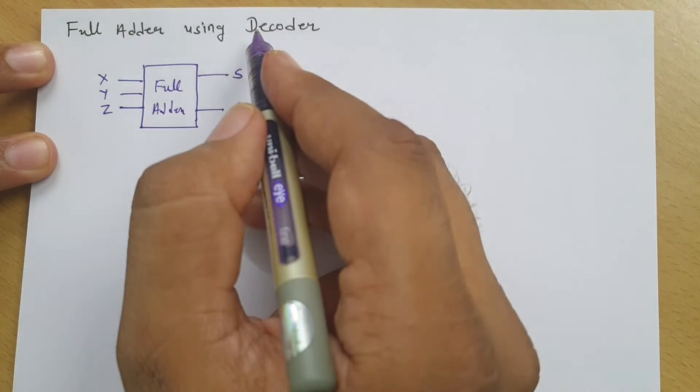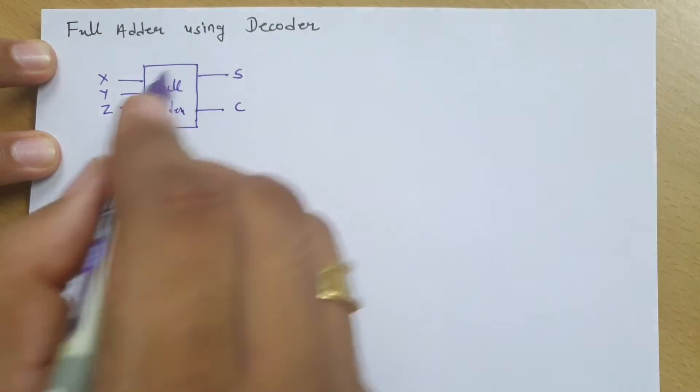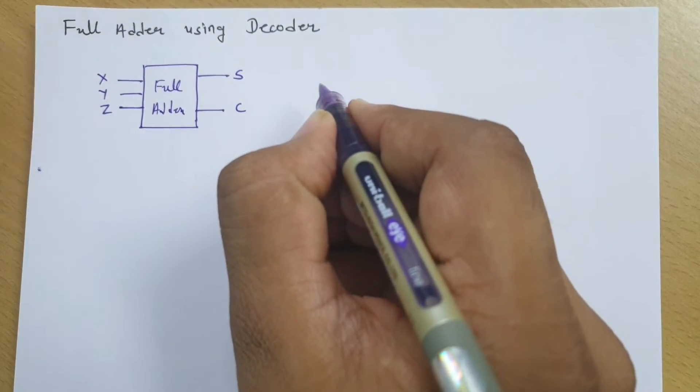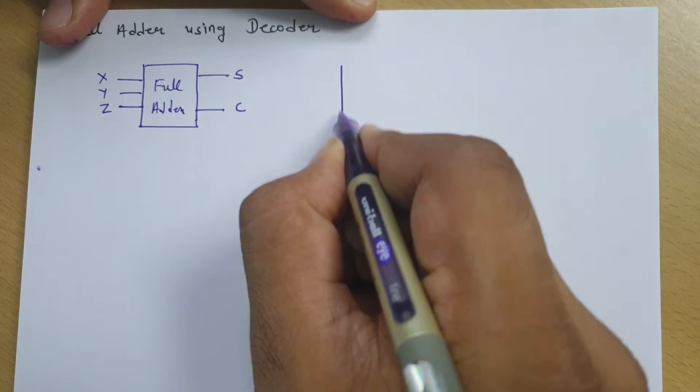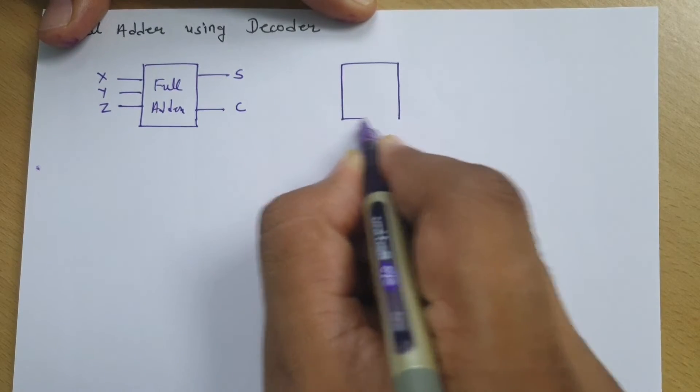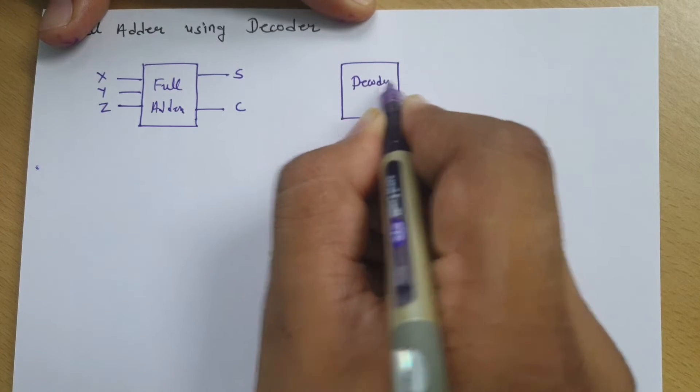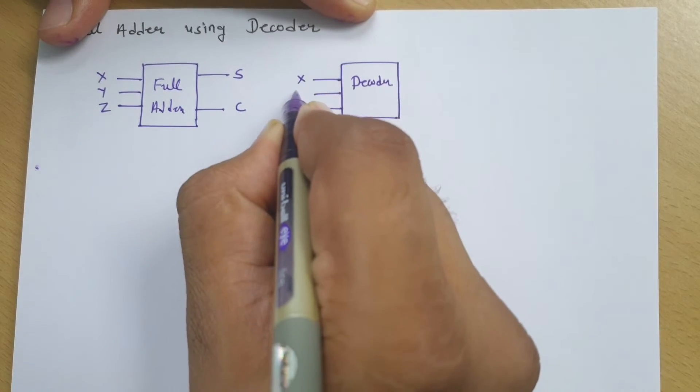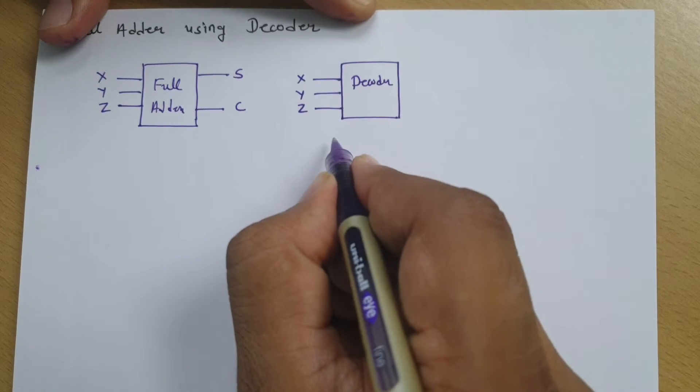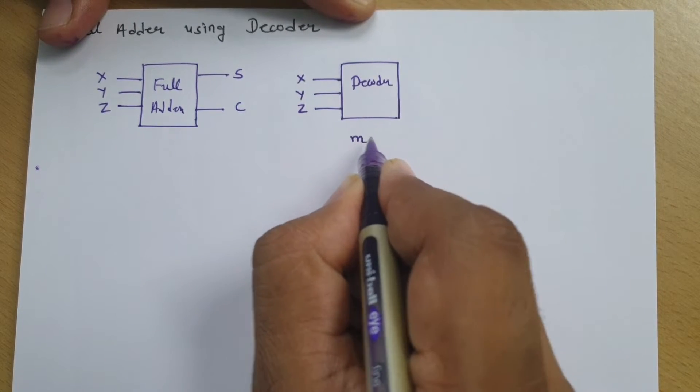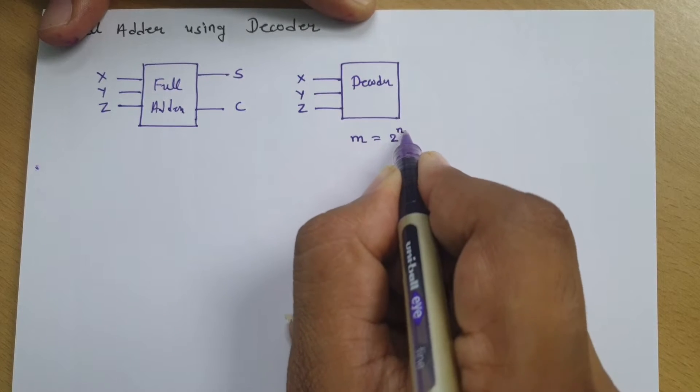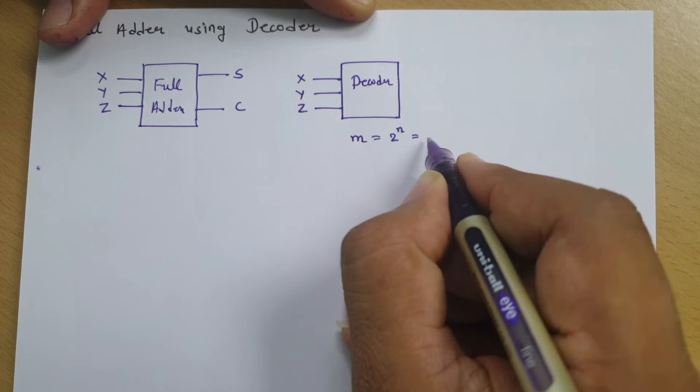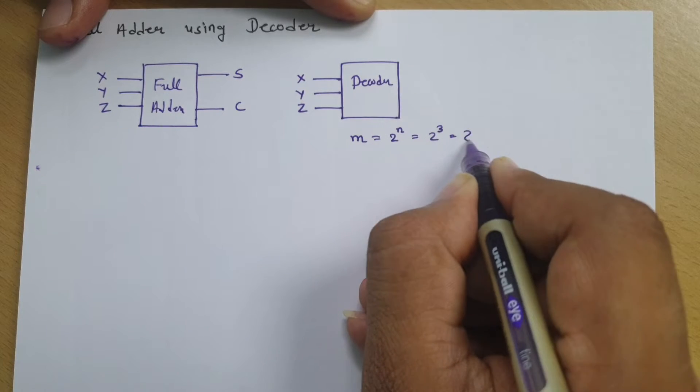We will be having three input decoder. To have three input decoder, how many outputs are required? If I have a decoder with three inputs x, y, and z, then how many outputs are there? Outputs m equals 2 to the power n, where n is inputs. Here n is 3, so total outputs will be 2 to the power 3 means 8.